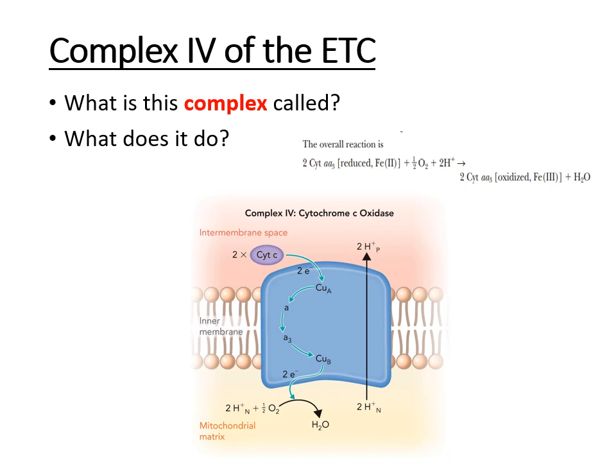In complex four, electrons are ultimately passed from cytochrome C to oxygen. Cytochrome C loses electrons — it is oxidized — and oxygen gains those electrons — it is reduced. When oxygen is reduced in this scenario, it forms water. This final complex involves oxygen, which is why this entire process is considered aerobic — the citrate cycle, electron transport chain, and ATP synthase are all part of aerobic respiration.